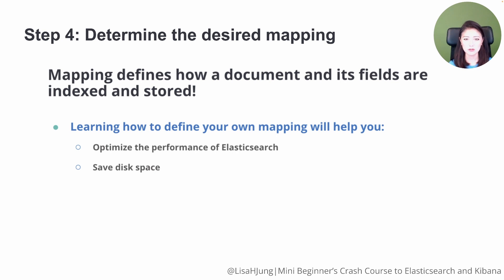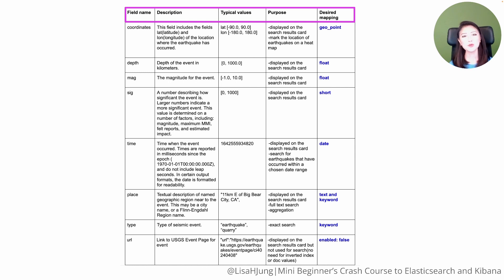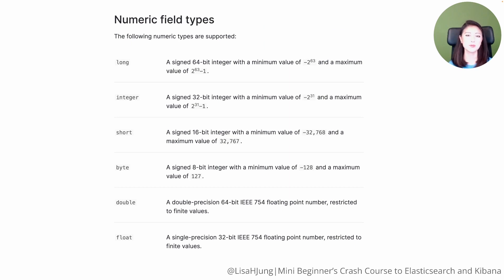I'll be breezing through this section, so be sure to review the mapping episode from Season 1 if some of these concepts are not clear to you. To make this process easier, I have created a table that displays the name of the field, description of the field, typical values contained in the field, the purpose this field will serve, and the desired mapping I have chosen for the field. So let's go through each field and determine why I chose certain field types. You'll see that these fields either contain numeric or string values, so let's look at the fields that contain numeric values first.